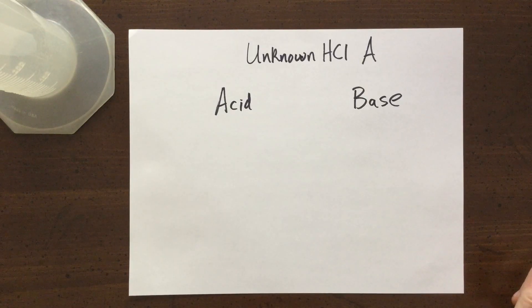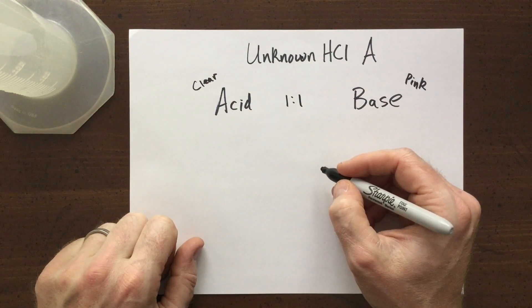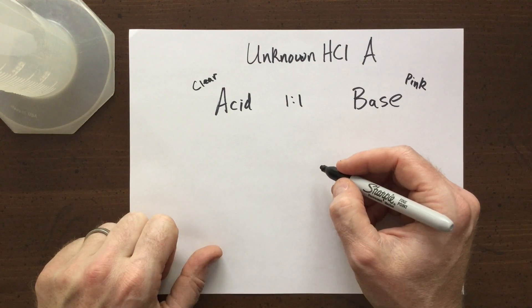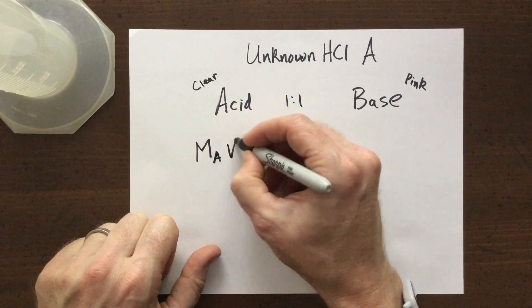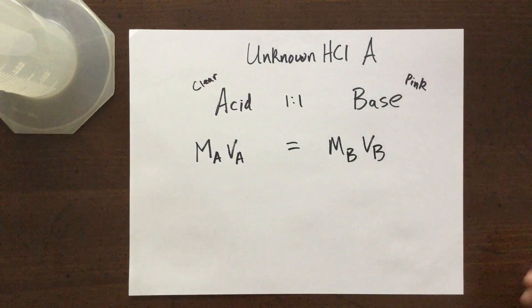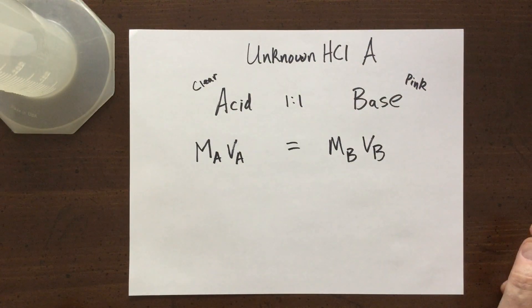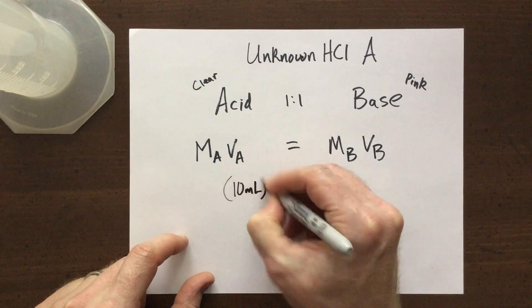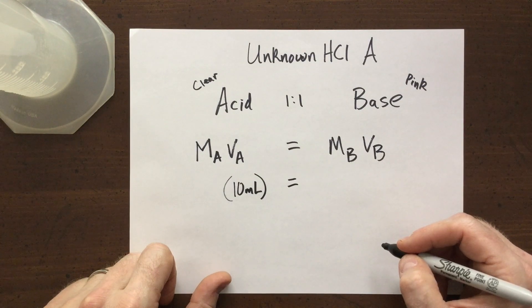Now let's try out the math on this. I always like to put the acid on the left and the base on the right. And remember, since we had a one-to-one ratio, we're able to use this shortcut method with MAVA equals MBVB. Now we know that the volume of acid that we started with at the beginning was 10 milliliters. And we also know that the molarity of the base that we started with was 0.1 molar.